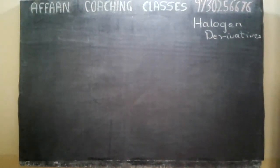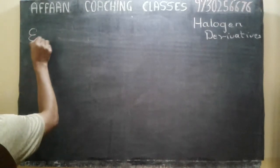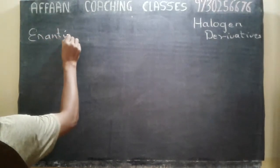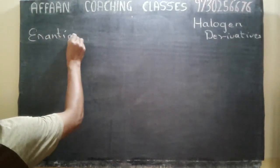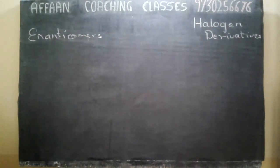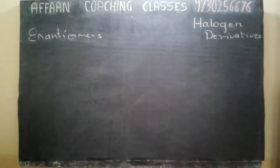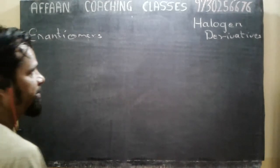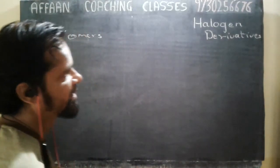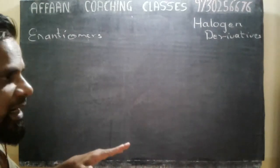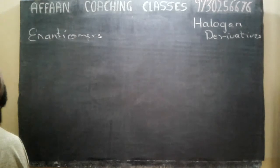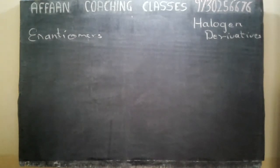You have enantiomers. What are enantiomers? These are the stereo isomers which are non-superimposable mirror images of each other and rotate the plane of polarized light through the same angle but in opposite directions. They are known as enantiomers.